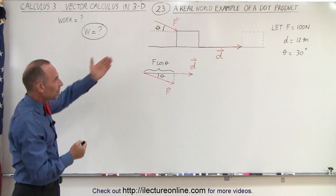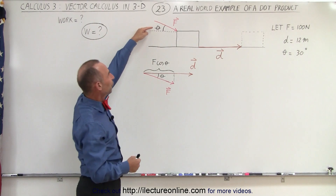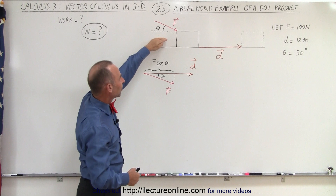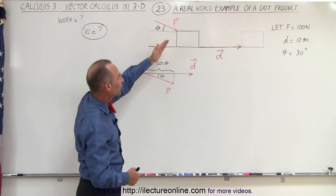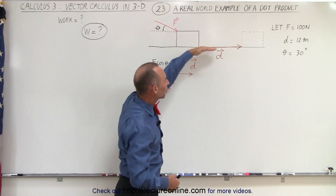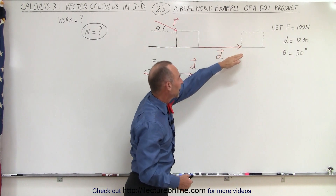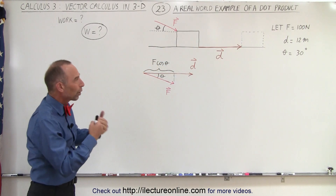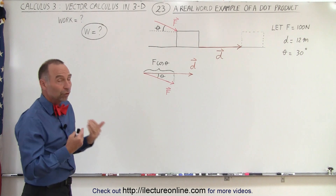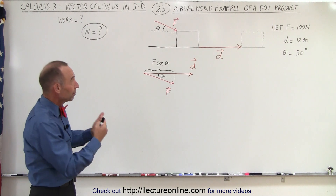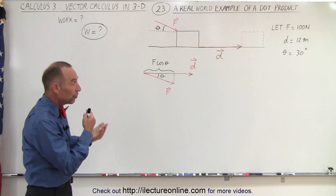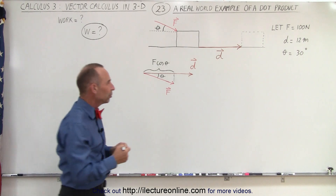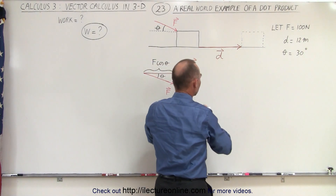Here we have an object that's being pushed by a force, but notice the force is not acting horizontally against the object — it's pushing the object horizontally across the horizontal plane a distance d. What we're trying to do is find the work done by the force, and it turns out the work done is equal to the dot product between the force and the displacement, represented by the vector d.